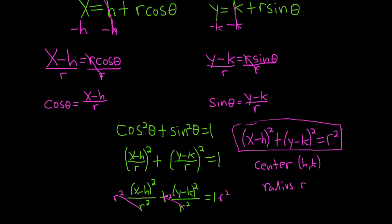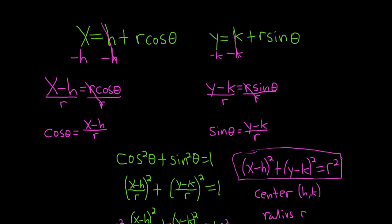So these parametric equations that were given originally in the problem are the parametric equations for a circle with center hk and radius r. And so all we did was convert them to the more familiar rectangular form. I hope this video has been helpful.